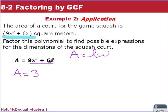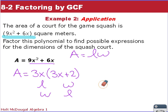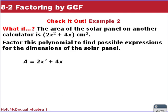We factor out 3x: 3x times 3x gives 9x², and 3x times 2 gives 6x, so the factored form is 3x(3x + 2). This tells us that either the length or width is 3x and the other is (3x + 2). The dimensions of the squash court would be 3x by (3x + 2).